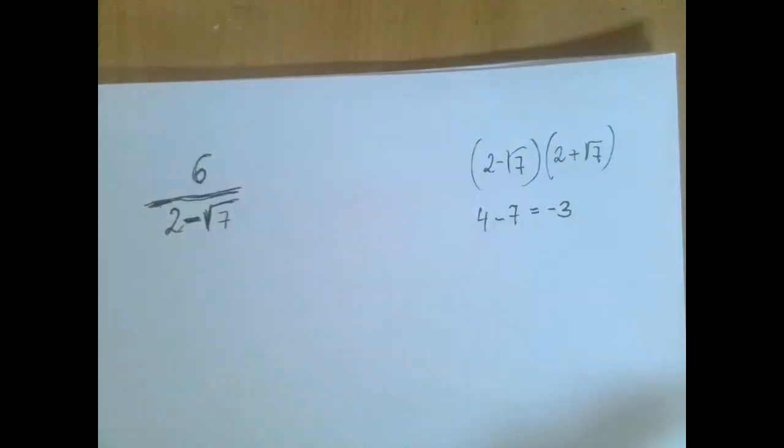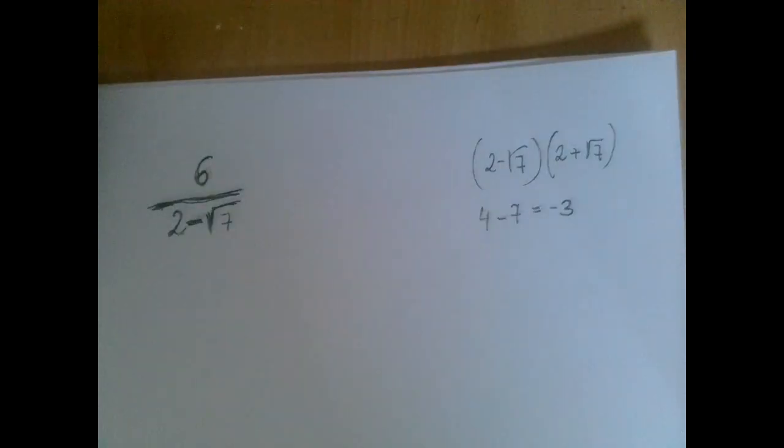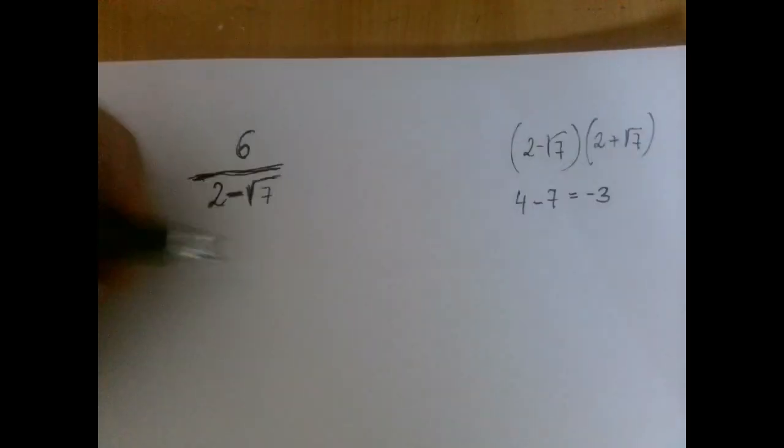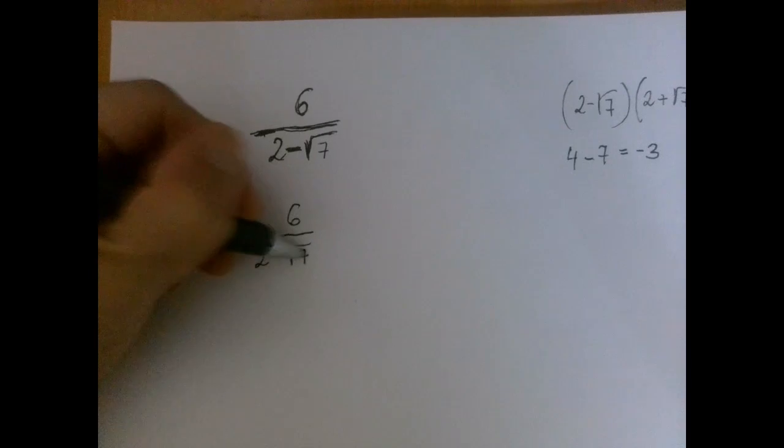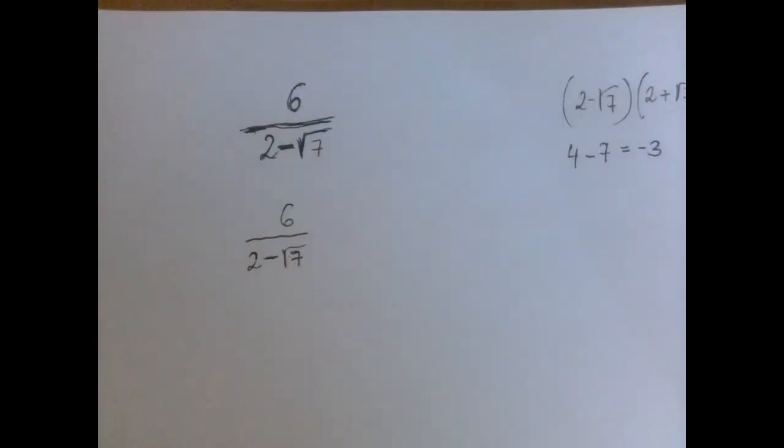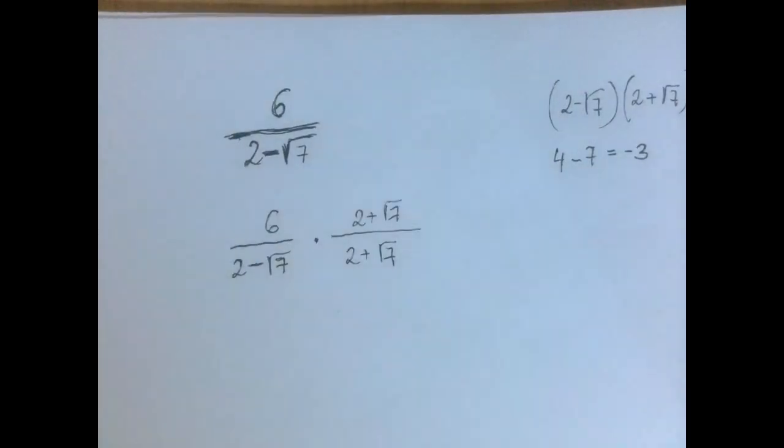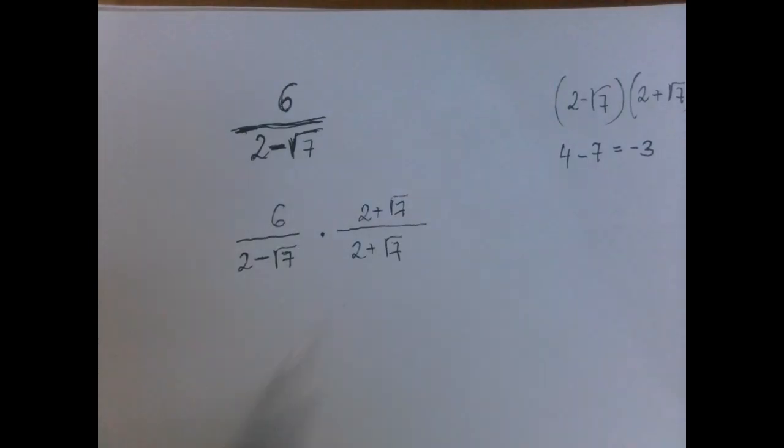All right. But we're not allowed to change the value of this expression, so what we're going to do is multiply it by 1. Remember, there are two operations we can always perform to a quantity, and those are add 0 and multiply by 1. We're going to multiply by 1, and that 1 is going to be 2 plus root 7 over 2 plus root 7.